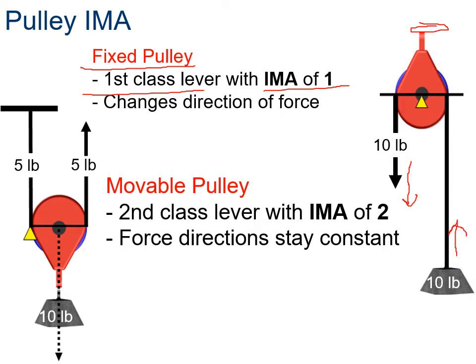If we have a movable pulley, it's considered a second class lever. This pulley can move up or down either way and it'll have an IMA of two. The force direction stays constant. So for example, if we're pulling up, it's going to pull the weight also up.